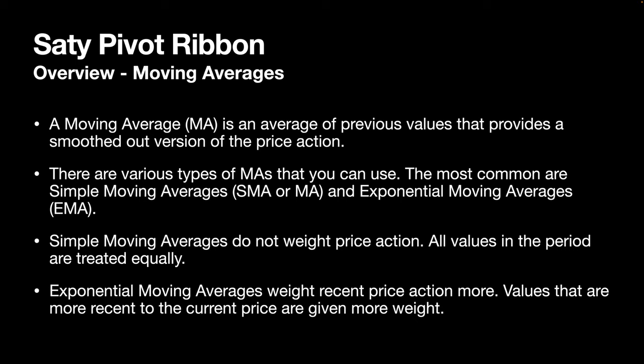A moving average is an average of previous values, and it effectively provides a smoothed-out version of the price action. There are various different types of moving averages. The two most common are the simple moving average, called the SMA or MA — or you may find it as a DMA, the daily simple moving average — and then there's the exponential moving average, or EMA. The simple moving average doesn't weight price action; every single value is treated equally and provides equal representation in the smoothed-out price action. Whereas exponential moving averages weight the recent price action more, so values that are closer are given a little more weight.